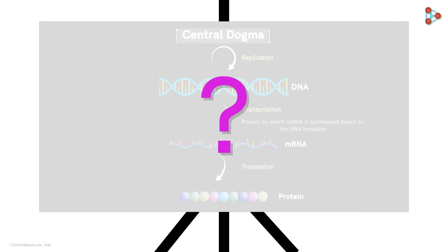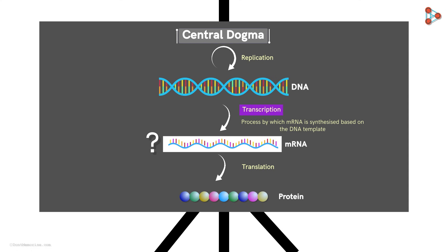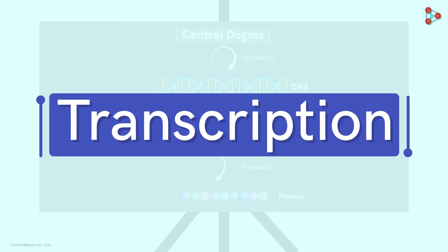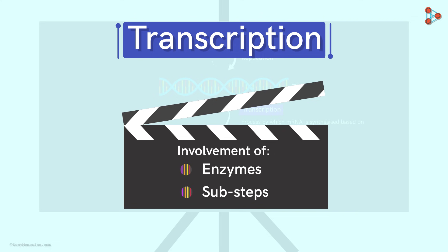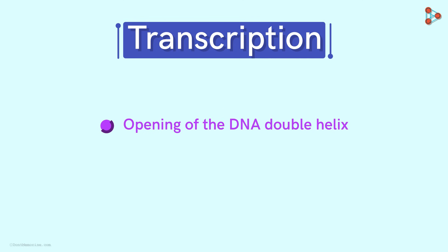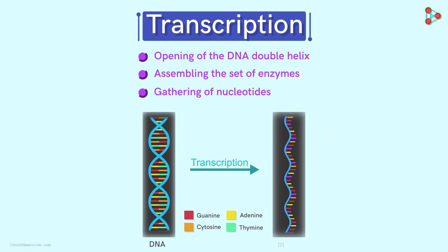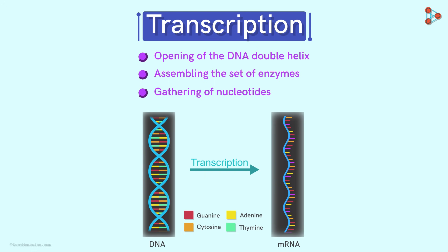Now, why is this process needed? It is quite simple. If there is no transcription, then how will mRNA be synthesized? And if that is not done, then how will the proteins be made? Hence, transcription is vital. But it is not as easy as it seems. There are several enzymes and sub-steps involved in the process — steps like opening of the DNA double helix at a specific point, assembling the set of enzymes, and gathering of nucleotides. After all these steps, an mRNA is formed. The mRNA is like an exact copy of the DNA sequence that codes the protein. The only difference is that mRNA is single-stranded and the base thymine is replaced by uracil.